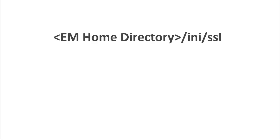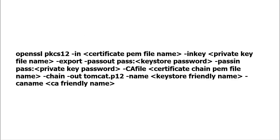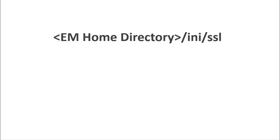Back up the existing tomcat.p12 file in the em-ssl directory. Create the tomcat.p12 keystore file by running the open-ssl command. Save the tomcat.p12 file in the em-ssl directory.